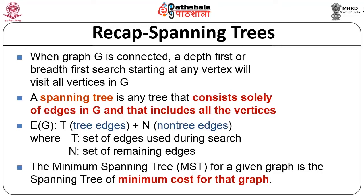The spanning tree consists of all the edges in graph G and includes all the vertices, but there is no cycle. An edge of G is either a tree edge or a non-tree edge. The non-tree edges will not form part of the spanning tree — only the tree edges. T is the set of edges used during the search of that tree, and N is the remaining edges which we do not include, either because they are not among the minimum or because including them would form a cycle. The minimum spanning tree for a given graph is a spanning tree of minimum cost. We are converting from a graph, which may have cycles, to a tree which does not have cycles — and that cycle is an important part of the differentiation between a graph and a tree.